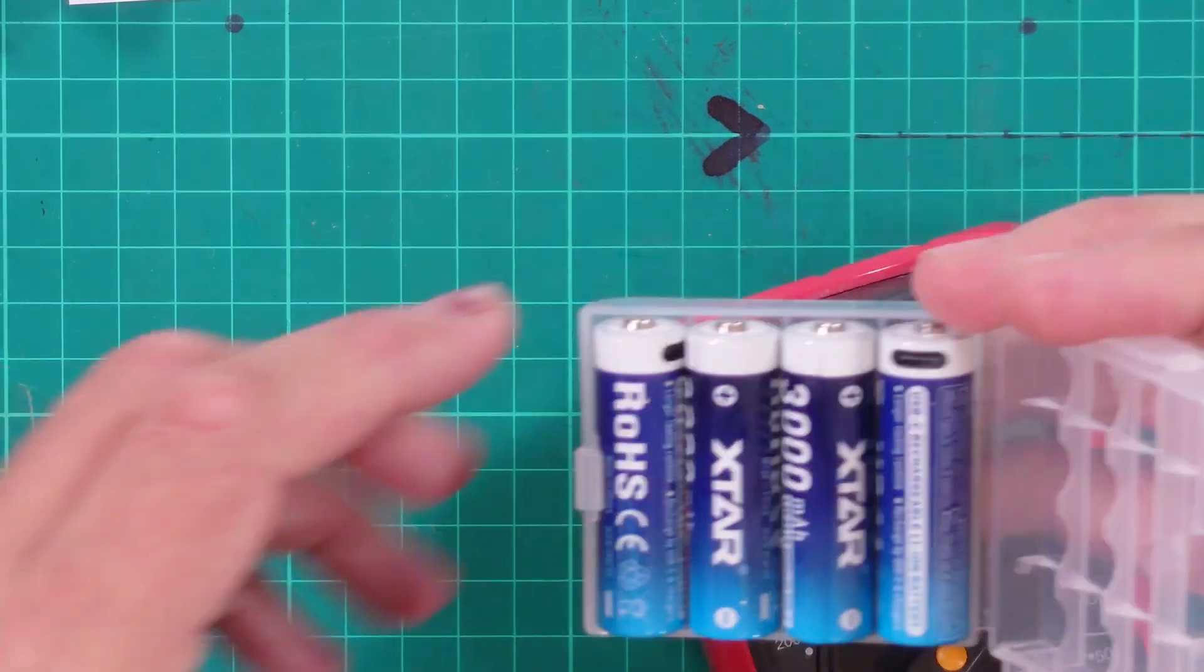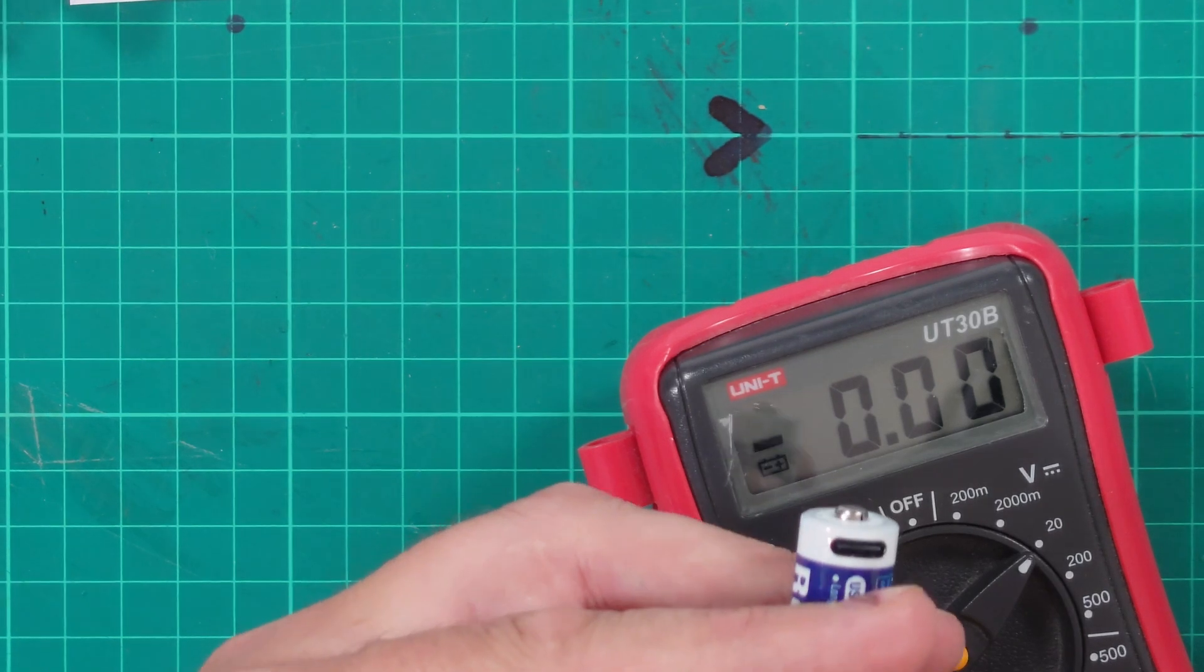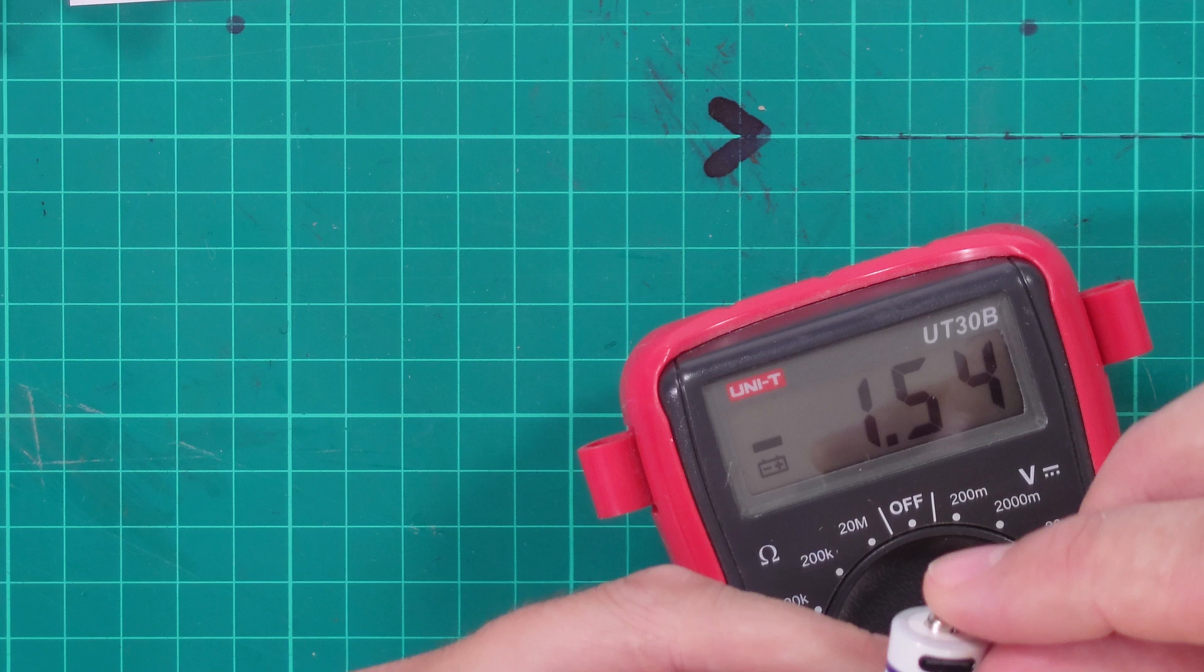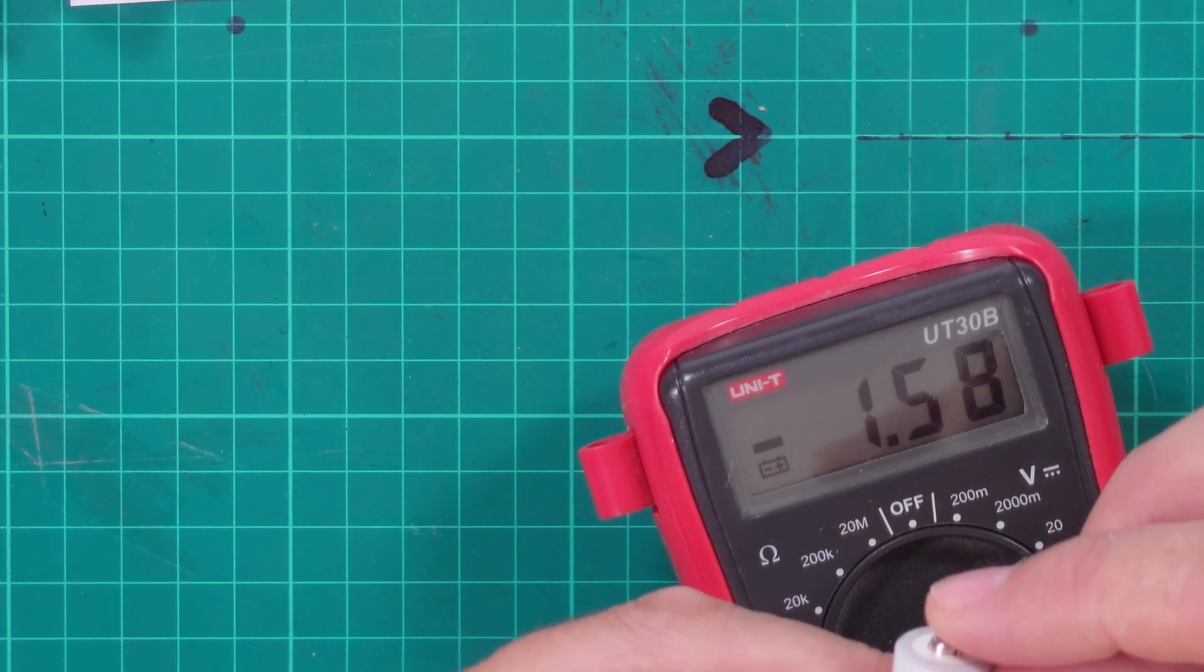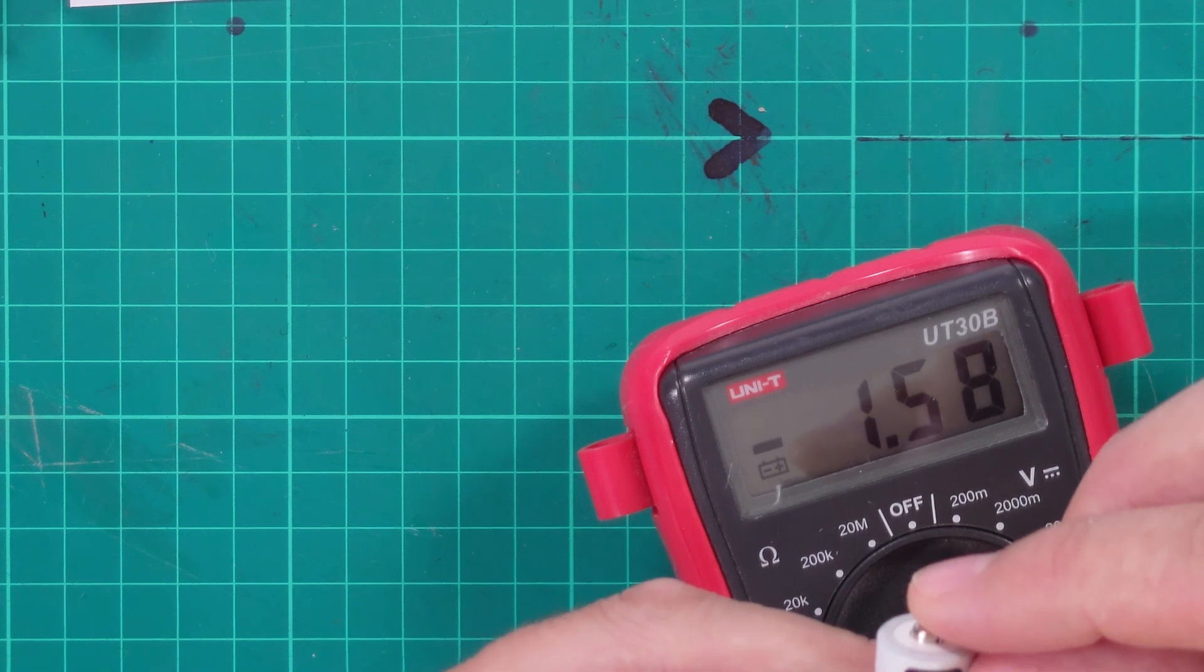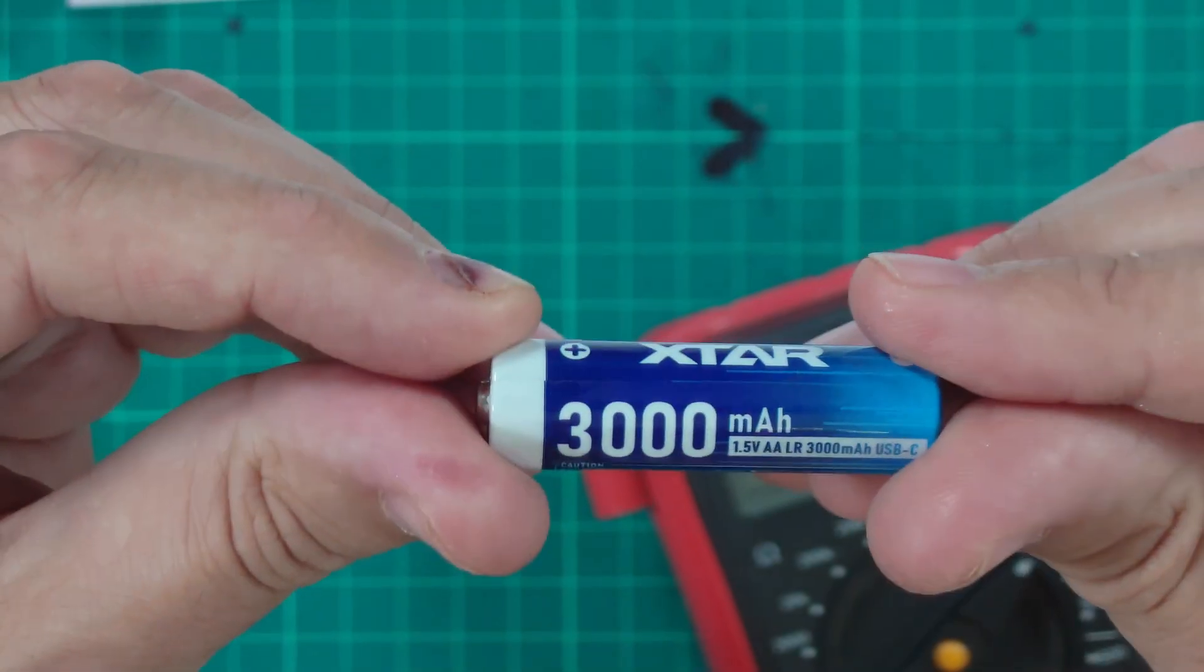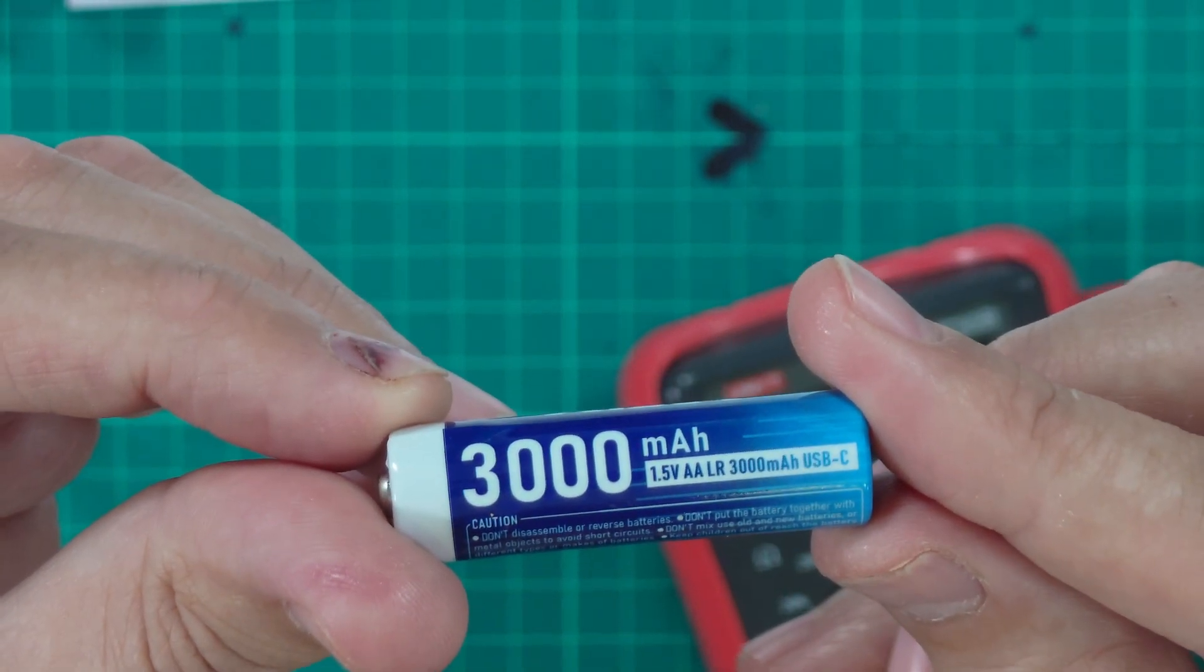Now let's have a look at how the X-Stars fare straight out of the box. So negative terminal on the back, positive on the top. 1.58. So these have held their charge really well. Obviously, that's unloaded. It probably dropped down to 1.5 when there's actually something using the current. But that's rather good. Well done, X-Star. Very good. 3,000 mAh, 1.5 volts.